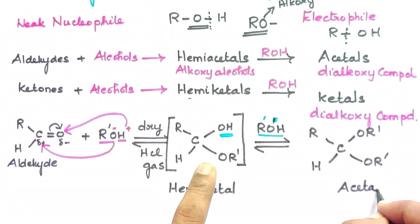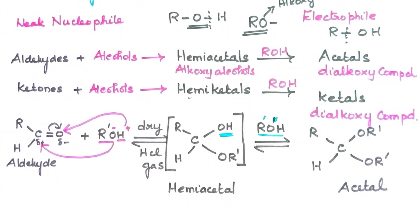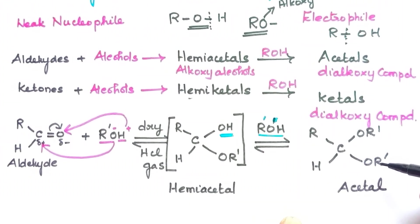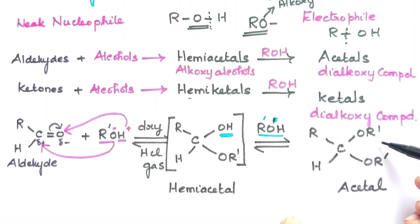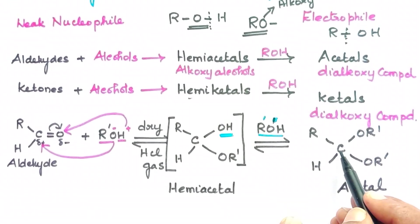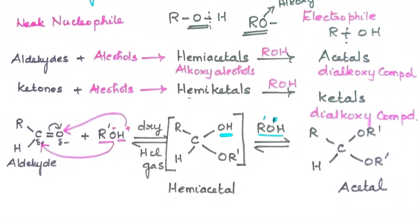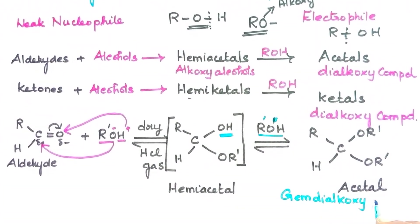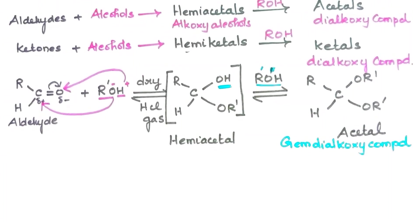The product is the acetal. If you look at it, there are two OR (alkoxy) groups attached. Two alkoxy groups means it is a di-alkoxy compound. These two alkoxy groups are attached to the same carbon atom — what we call a gem di-alkoxy compound. This product is the acetal. Looking at this reaction, there are two main points to consider.